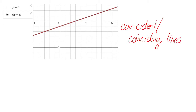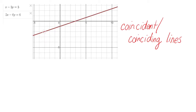When they are the same line, they share the same points — they are coincident or coinciding lines. How many solutions are there? They share the same line. Every point on the first line is also a point on the second line — the lines extend infinitely in both directions. So meaning, infinitely many solutions.